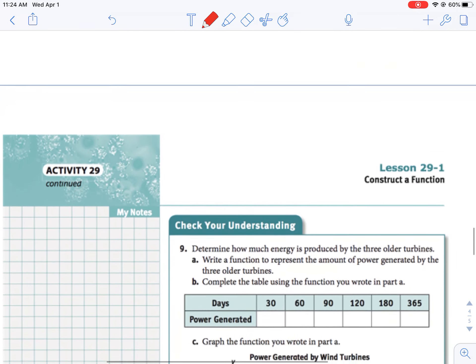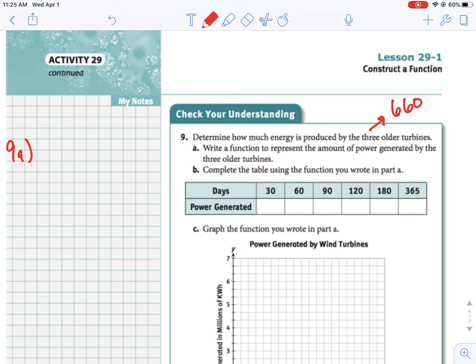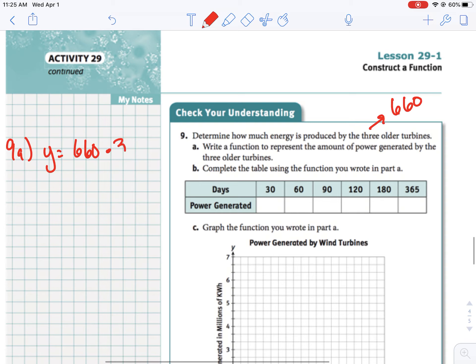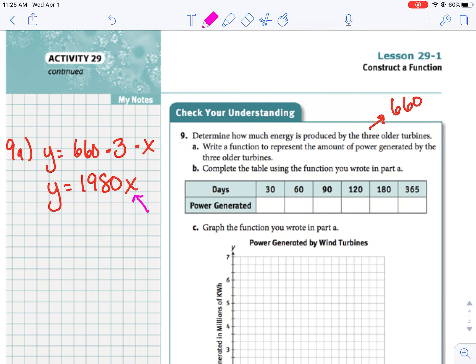So going to the next question, how much energy is created by the three older turbines? If you go back to the first page, each turbine produced 660 kilowatts per hour. So that was each machine, not all three. So for 9a, we're going to have to take that 660 kilowatts and multiply it by 3, and remember that that's per hour. So our equation is going to be y equals 1980x. So part B says to create the table just like we did for part A. That is something that I'm going to actually have you guys do for homework. But the one thing I want you to remember is that this is in hours. So to do 30, you're going to have to do y equals 1980 times 24 for hours times 30 for days.